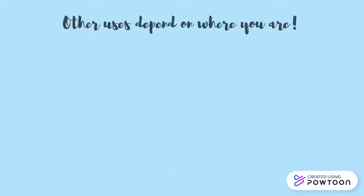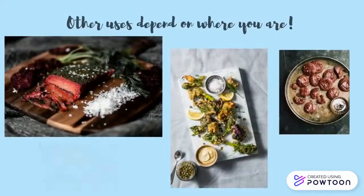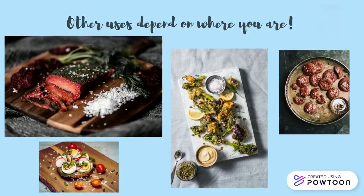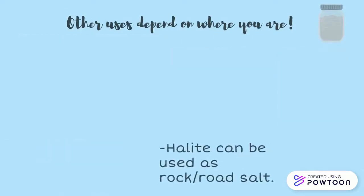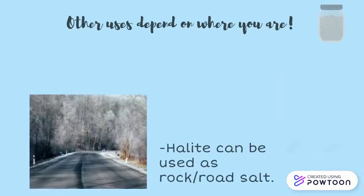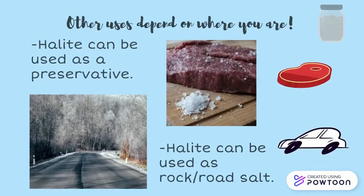Though halite is most commonly used as table salt, it does have other uses depending on where you are. Halite is used differently in separate parts of the world. In colder climates, halite is used as rock salt to stop roads from freezing over, but in warmer climates, halite is used to preserve foods. When meat and other perishables are dredged in salt, they last longer.